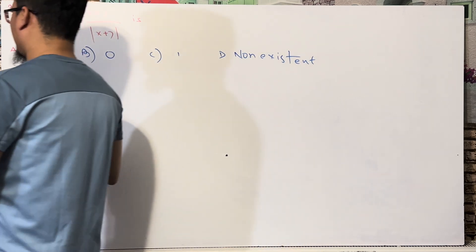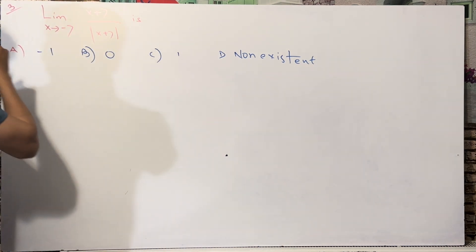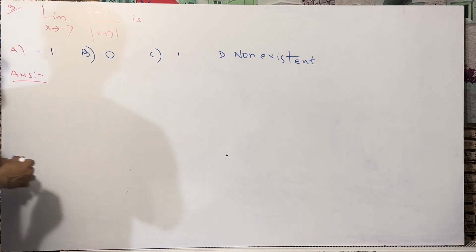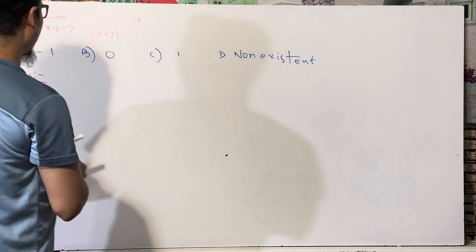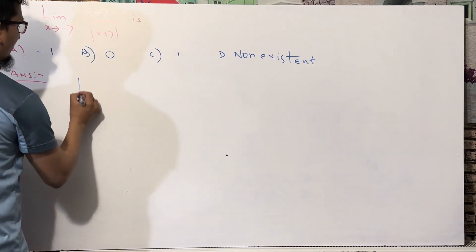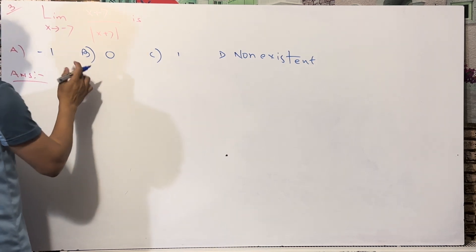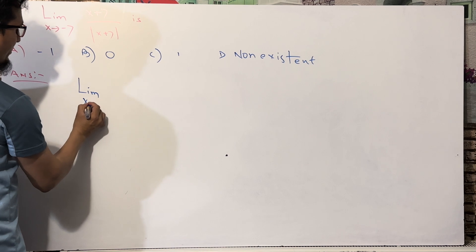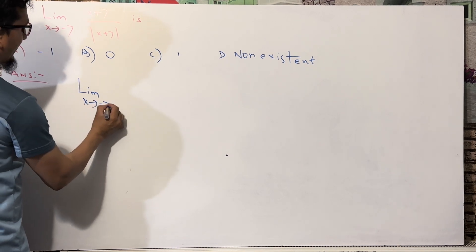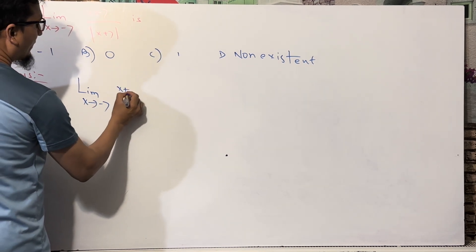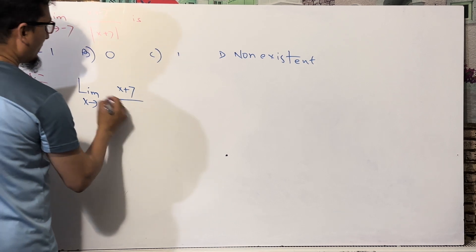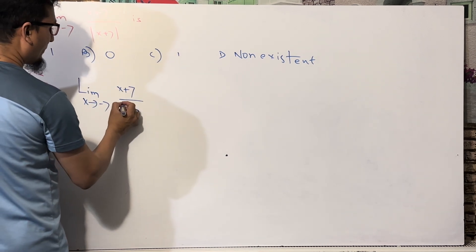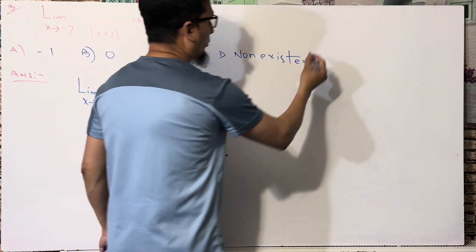Okay, we are going to solve this question. The question is: limit as x tends to minus 7 of (x + 7) divided by |x + 7|.